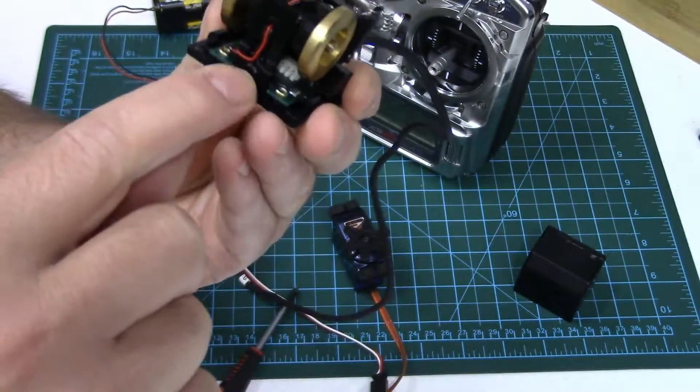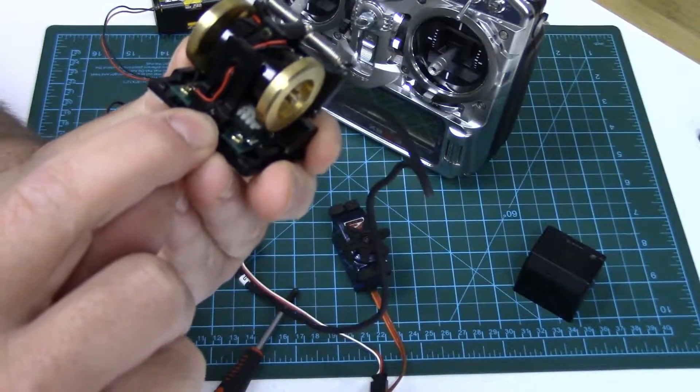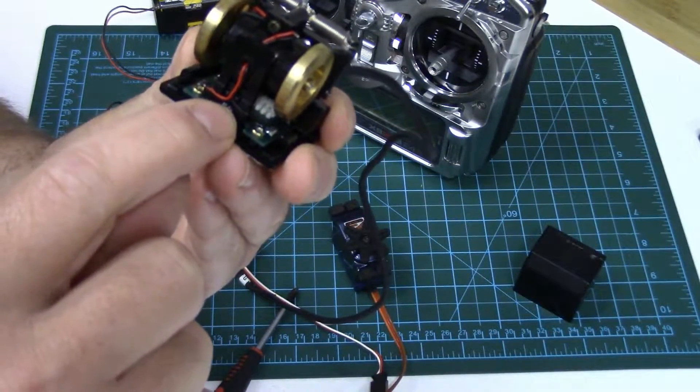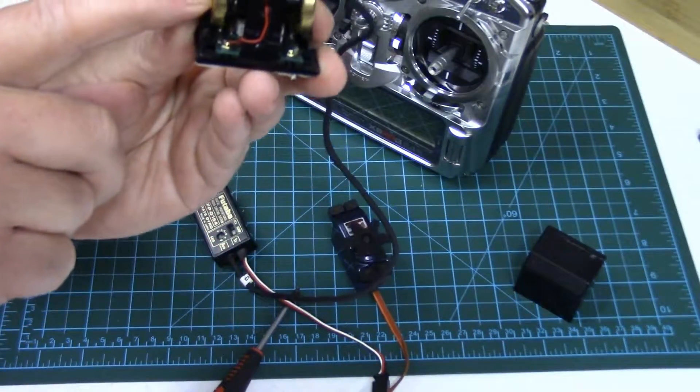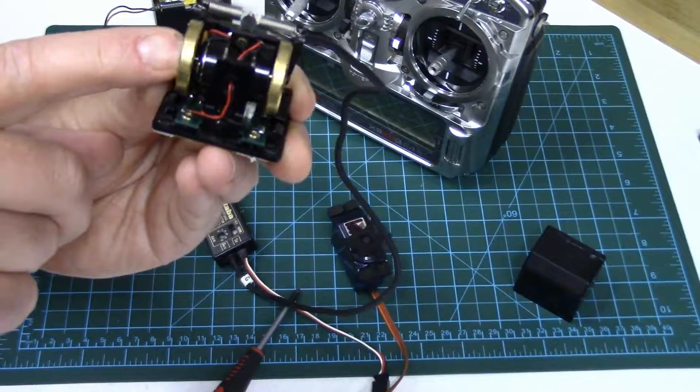And there's a little hall effect sensor at the bottom, it's a little magnet and a hall effect pickup. So as this moves off-center it imparts movement to the servo, and that's as simple as it was.